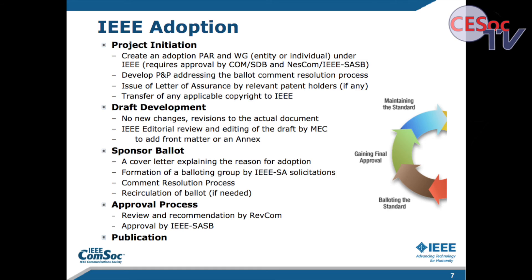For adoption of something like a FOG reference architecture, we would initiate it, develop a draft, do a sponsor ballot, and then the approval process would occur. This can be relatively quick, which is something industry consortiums are often concerned about, and it gets your standard done pretty quickly. In the case where you want to start a standard from scratch, you're doing essentially the same processes, but the technical development stage can take six months to two years — so typically a longer process than an adoption process.